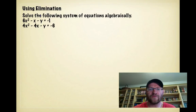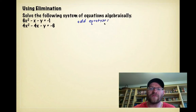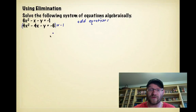Using elimination — here's our example. Solve the following system of equations algebraically: 6x² − x − y = −1 and 4x² − 4x − y = −6. The goal is to add these equations together to eliminate one variable. We can eliminate y, but not x, since we have both an x² term and an x term. To do that, I need the same coefficient in front of the y's but with opposite signs. Since both have −1 in front of y, I'll multiply the entire second equation by −1.